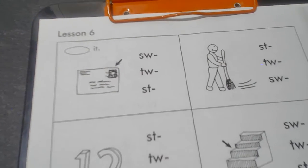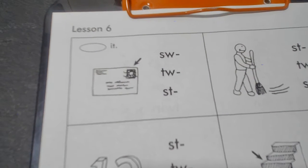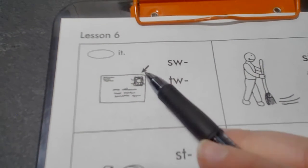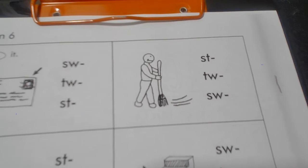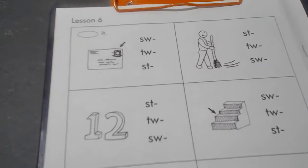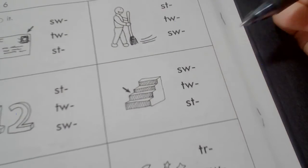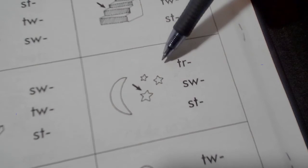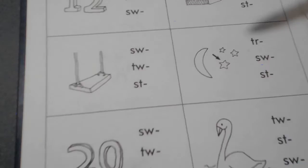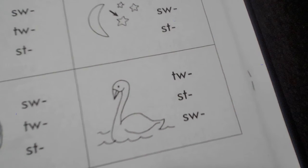Okay, let's take a look at our pictures. This first one is a stamp. When you mail an envelope you have to put a stamp on it. This is sweep, 12, step, swing, a star, 20, and swan.